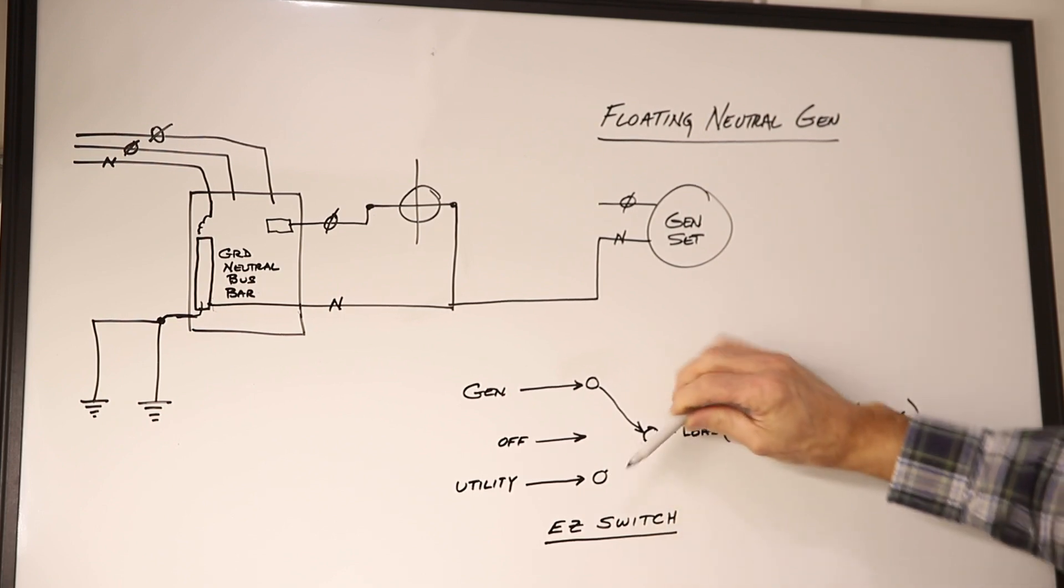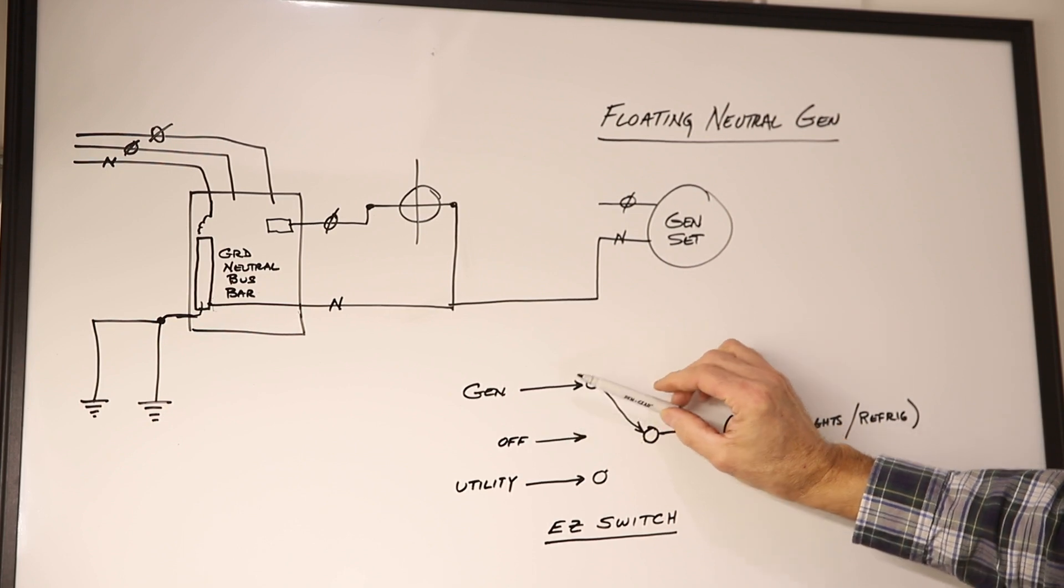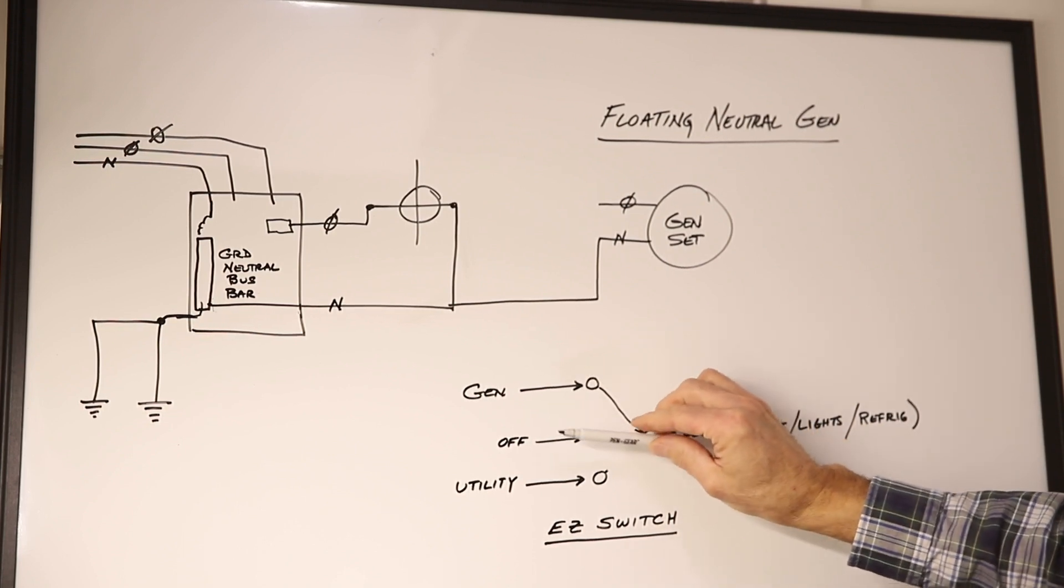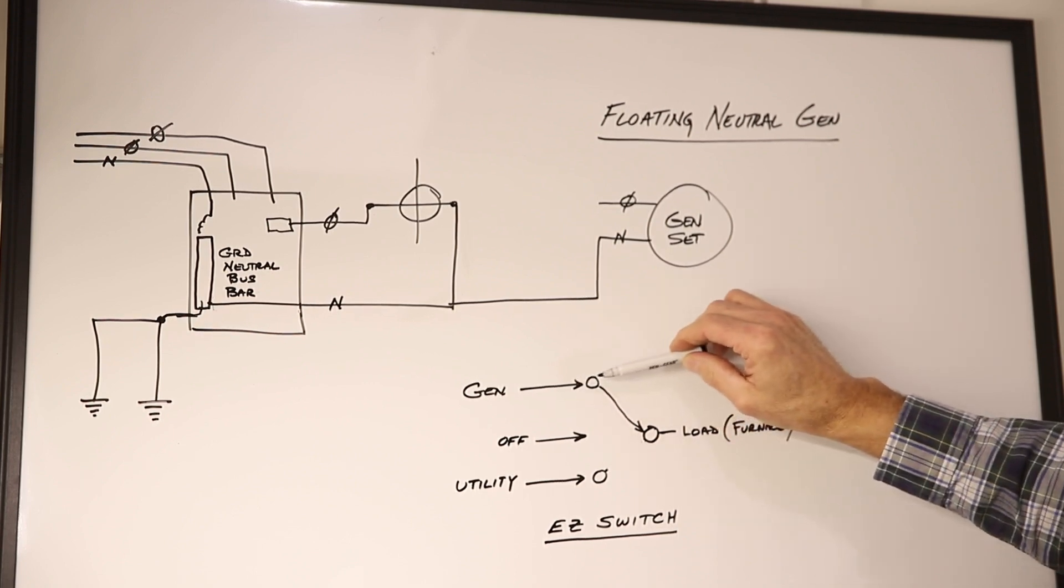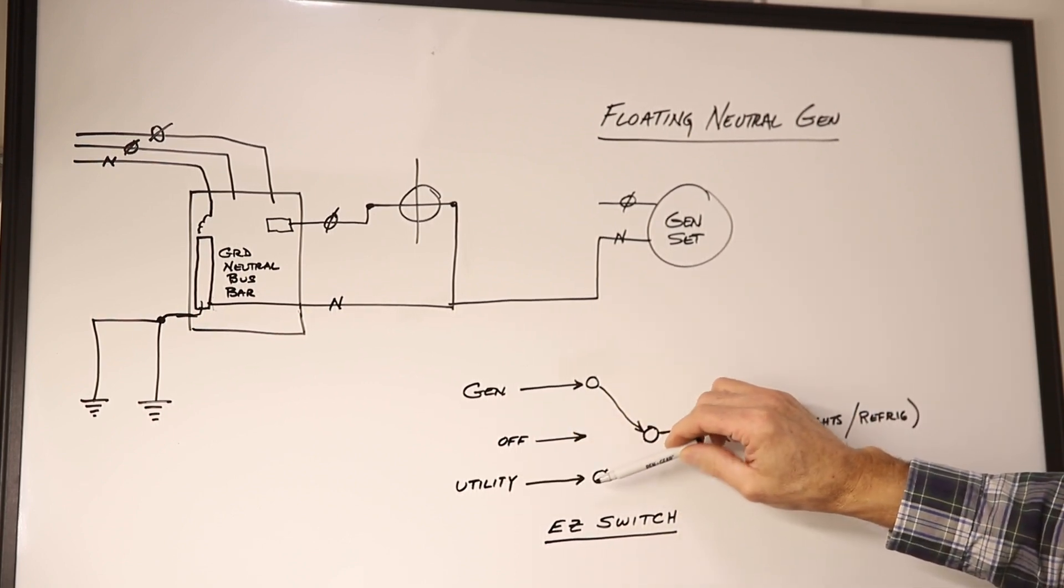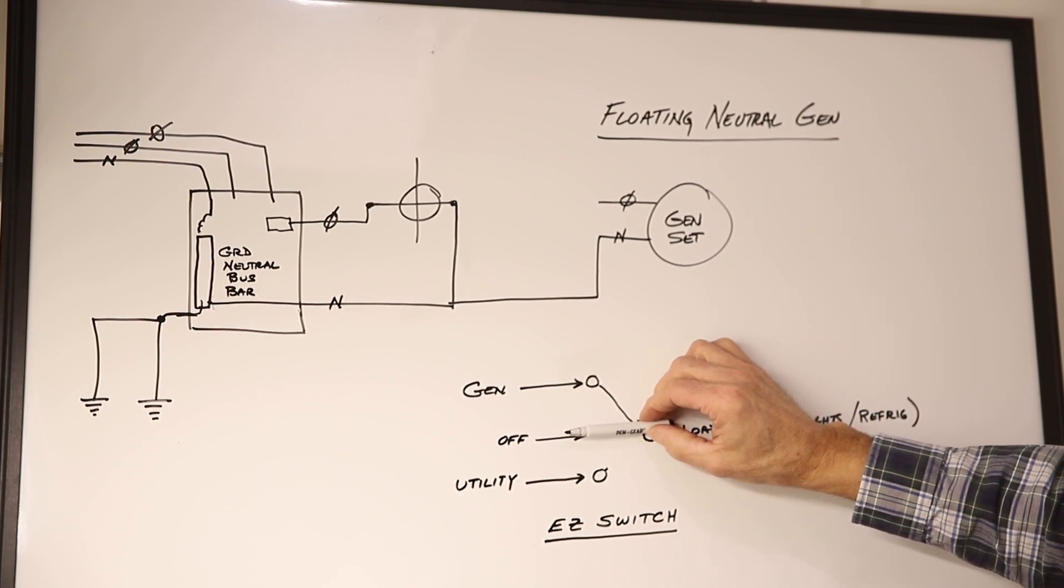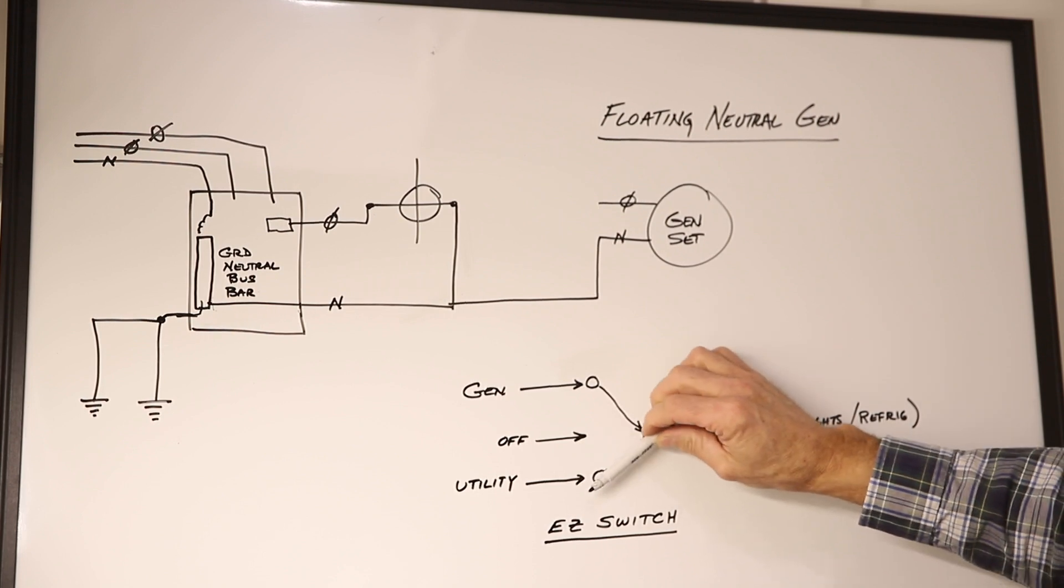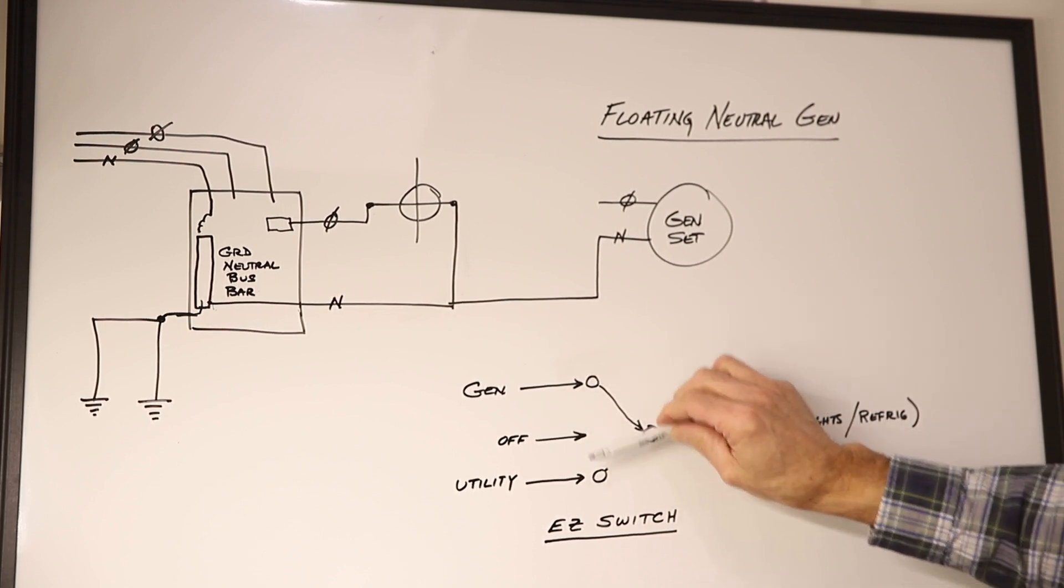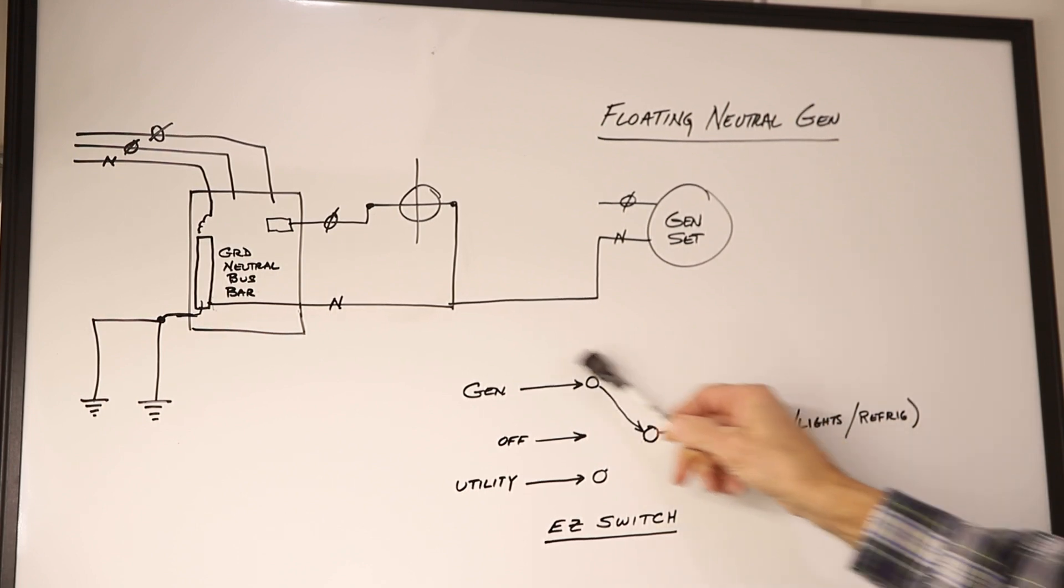You can't be in both places. It's either in utility, off or generator and the off position is there in case both have power. Your generator is producing power and utility coming in is live. This switch momentarily stops here and it's what we call break before make. It breaks the circuit before it makes the next one and stops the arc or stops a flashover.